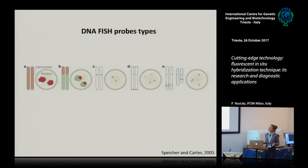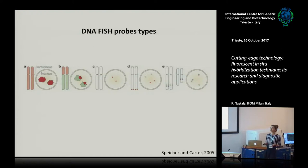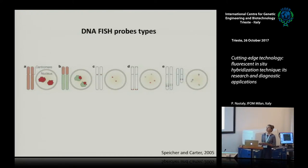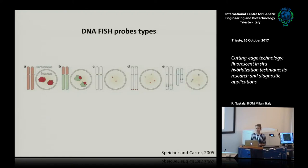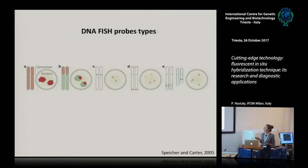There are different types of FISH probes. There are probes that mark whole chromosomes, called chromosome painting probes. There are probes that mark regions of chromosomes, for example long or short arms. There are probes that mark repetitive sequences like centromeres or telomeres. There are probes that mark specific genetic loci, and also probes that enable us to see the fusion of genetic loci.